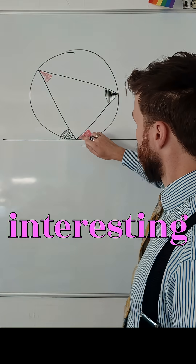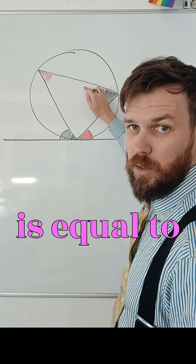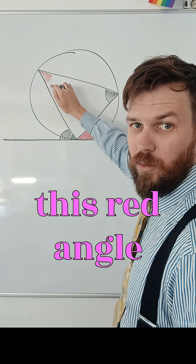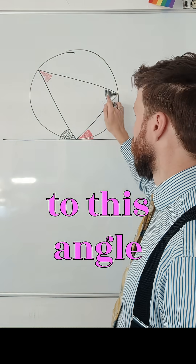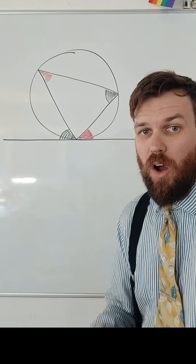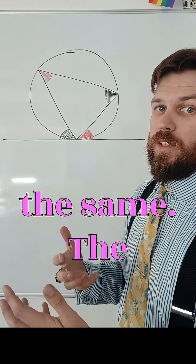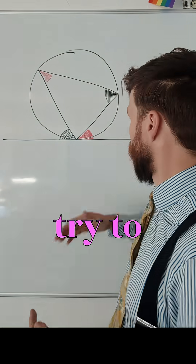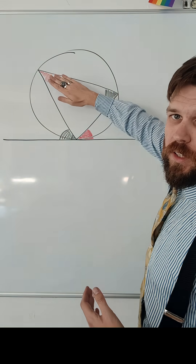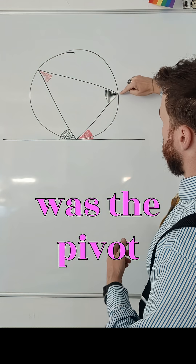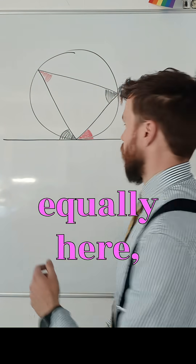Now, the interesting thing here is this red angle is equal to this red angle, and this angle here is equal to this angle here. These are alternate segments, and the angles are the same. The way I try to remember it is if I took this and, like, shunted it up — so if I just took this angle and this was the pivot, and spun it up, these two angles would match.